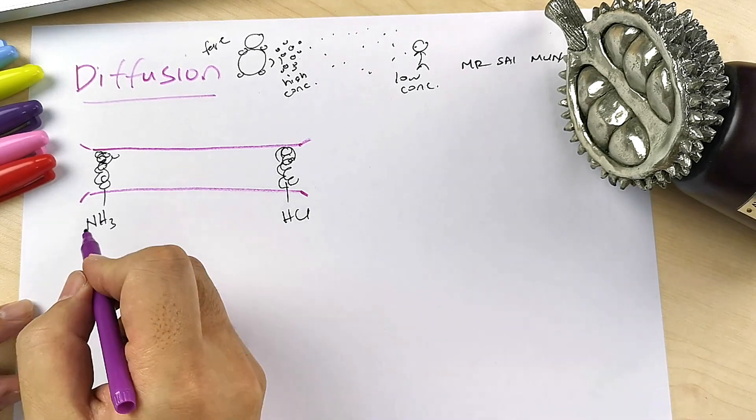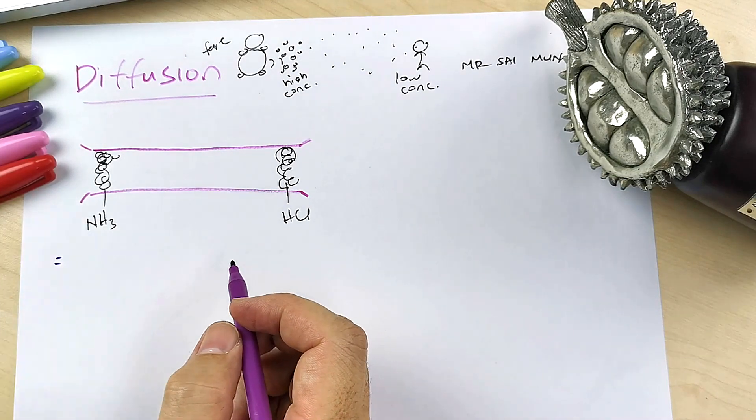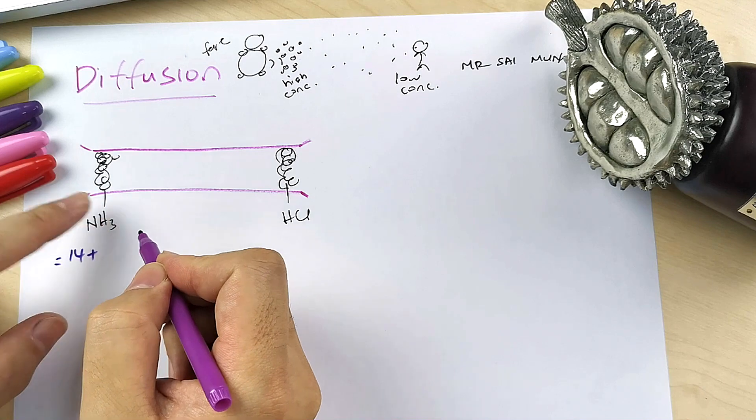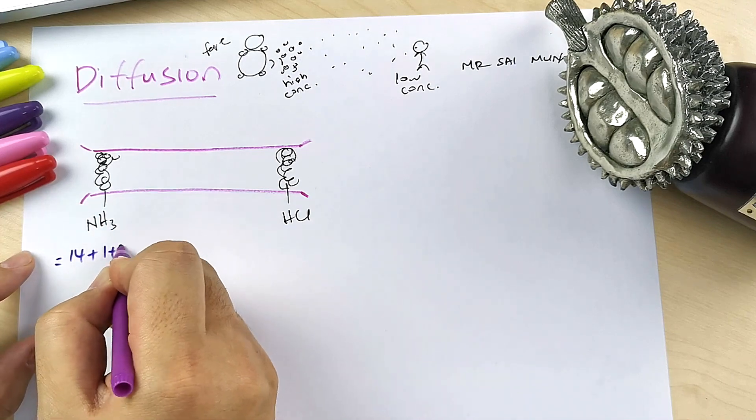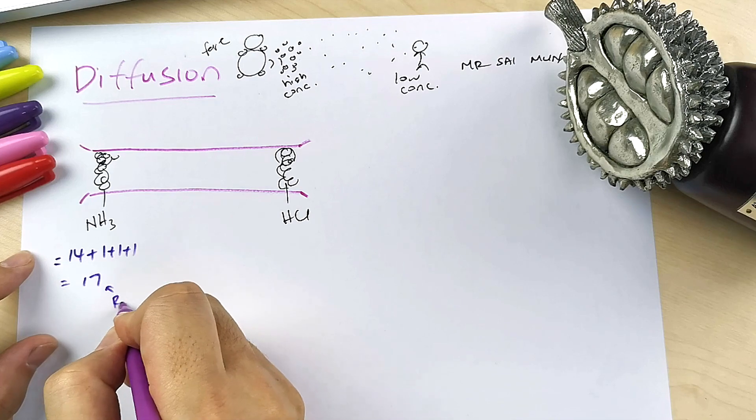So to give you a good head start, you can count the relative mass. So nitrogen, if you check your periodic table, is 14. Hydrogen is 1, so 1 plus 1 plus 1 is 17. So this is the relative mass of ammonia.